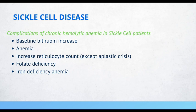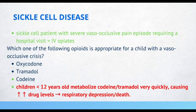If a patient with sickle cell disease presents in severe vaso-occlusive pain, give them IV opiates. Which opioid is appropriate for a child with a vaso-occlusive crisis — oxycodone, tramadol, or codeine? The correct answer is oxycodone. Children less than 12 years old metabolize codeine and tramadol very quickly, causing extremely elevated levels of these drugs which can lead to respiratory depression and even death.